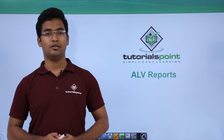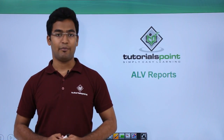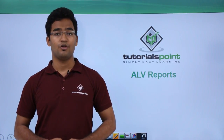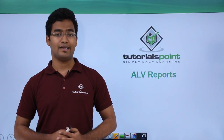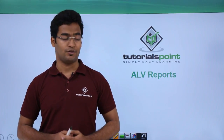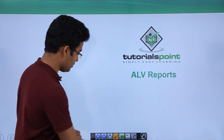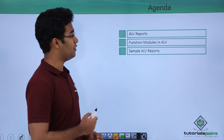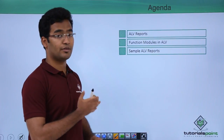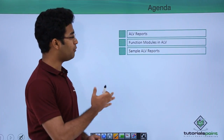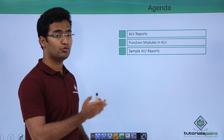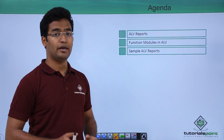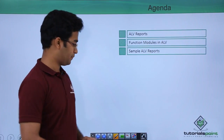In this video we will see the third type of ABAP reporting, that is ALV reports. Let us look at the agenda for this session. First we will cover the overview of ALV reports, then we will see the function modules that are being used in ALV, and at the last we will see an example ALV report.